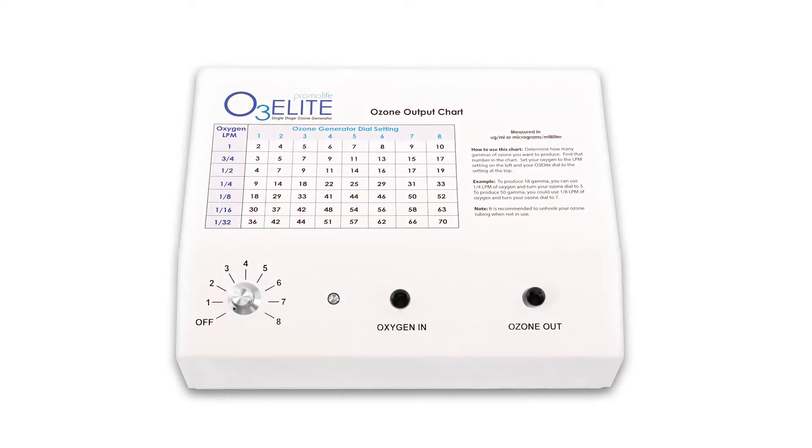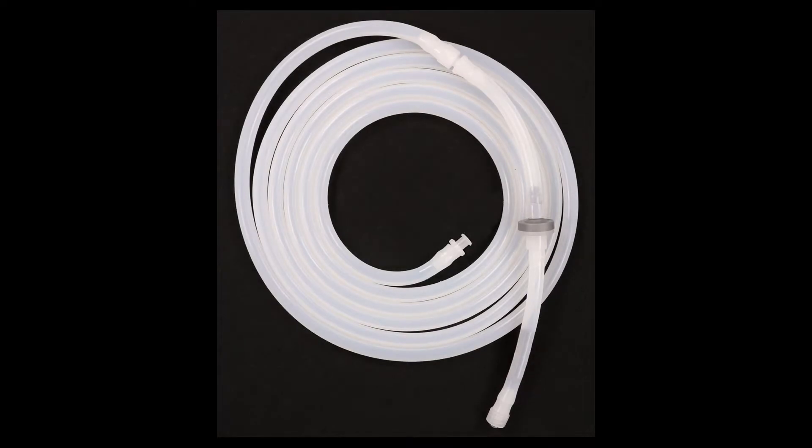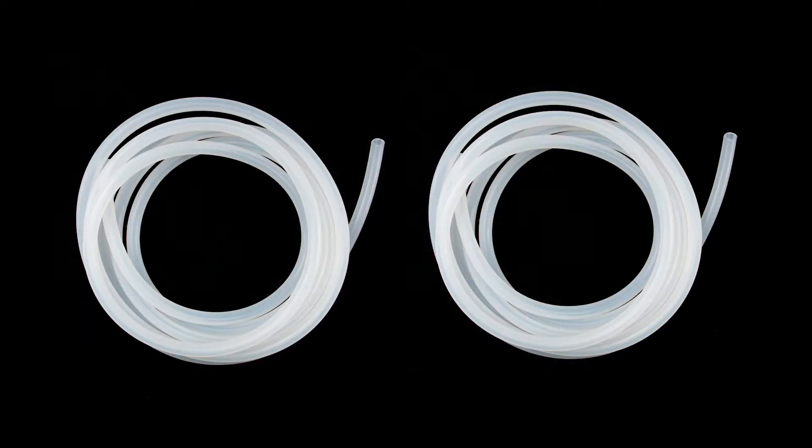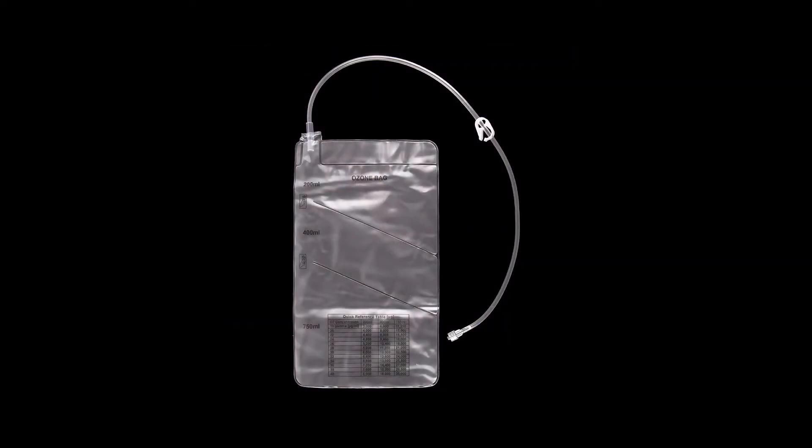Those include an O3Lite single ozone generator, tubing with a checked valve attached to 5 feet of silicone tubing, a 500ml ozone water bubbler humidifier combo, two 3-foot sections of silicone tubing, an ozone destruct system, a multi-chambered insufflation bag with a hose clamp, and a catheter.